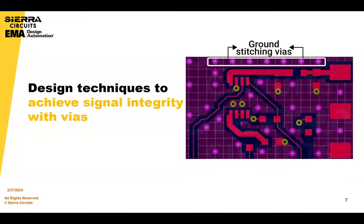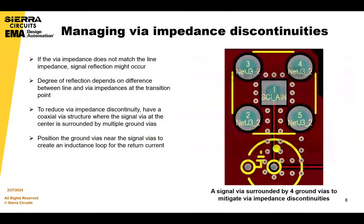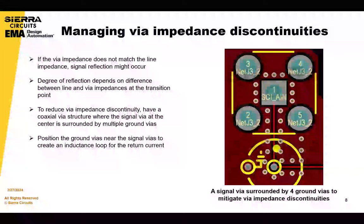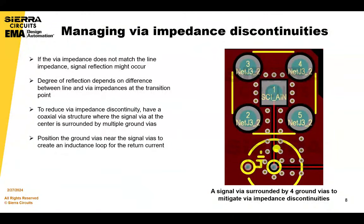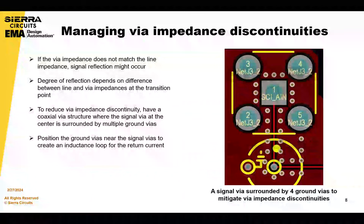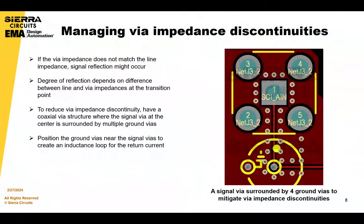We're going to go over design techniques to achieve better signal integrity. In managing your VIA discontinuities, if the VIA impedance does not match the transmission line impedance, signals passing through the VIA may reflect back. The magnitude of this reflection depends on the difference between the impedance of the trace and the VIA at that transition point. To reduce the impedance discontinuity, you can implement a coaxial VIA structure where the signal VIA at the center is surrounded by multiple ground VIAs, positioned near the signal VIAs to create a proper inductance loop for the return current.